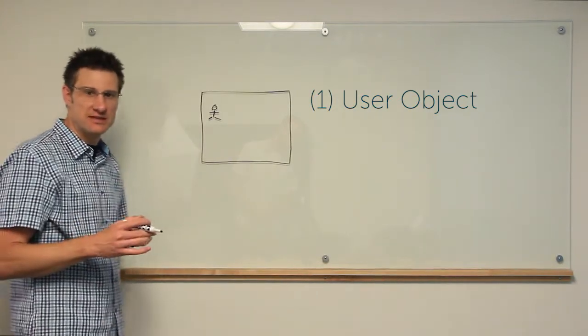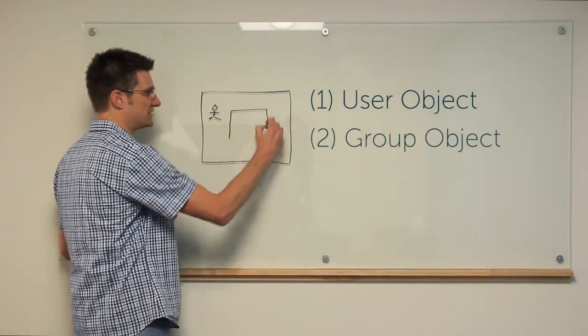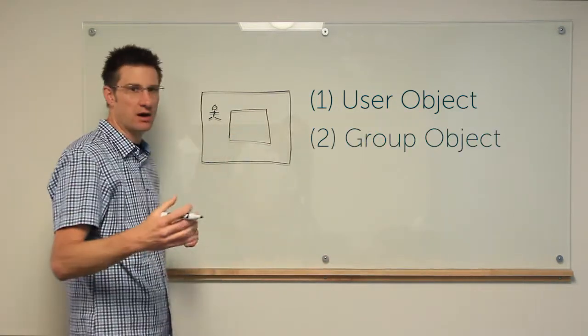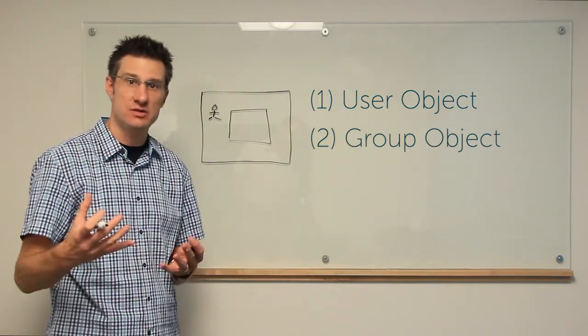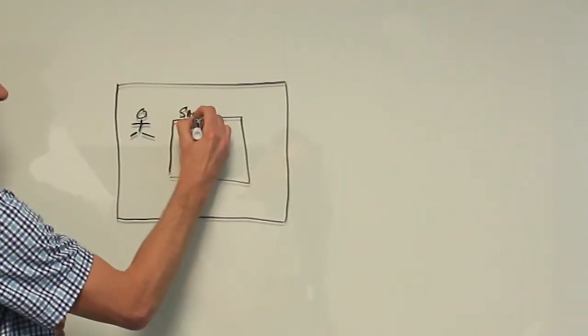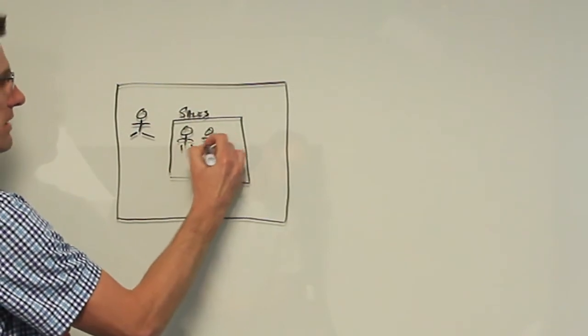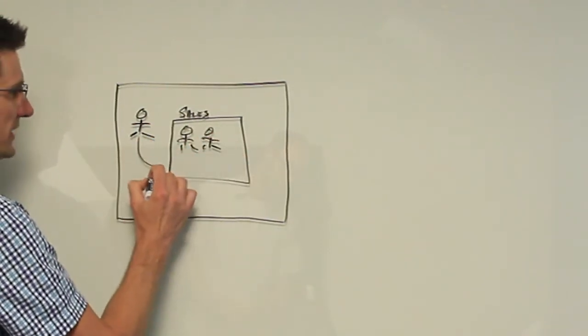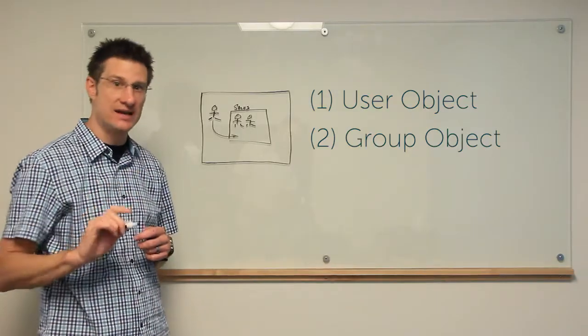The second object type that you will be familiar with is a group object. And just as the name implies, groups are exactly that. They are collections of things. Typically, collections of users, like a sales group. Inside that group are your members, your user members.